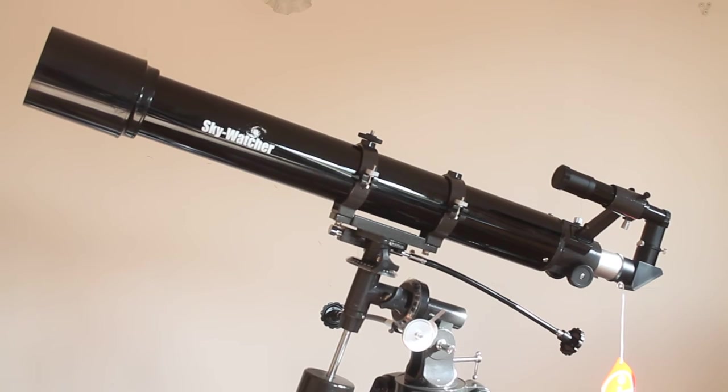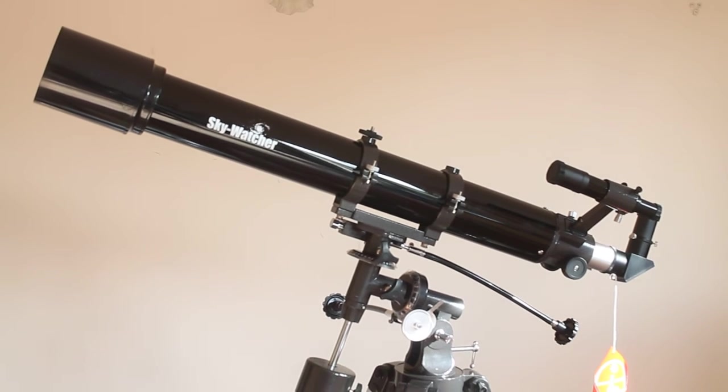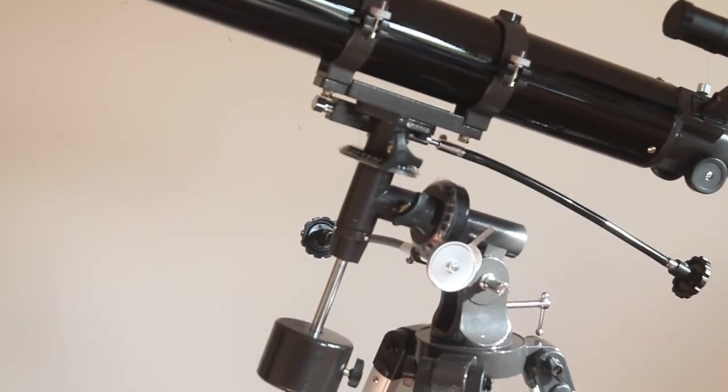So in a previous video I had a look at the Sky Watcher Capricorn 70 EQ1. This is the Sky Watcher Evostar 90 EQ2 so it's one model up. It's got the same 900mm focal length as the Capricorn but obviously that slightly larger 90mm objective and the EQ2 mount.